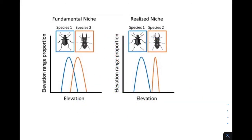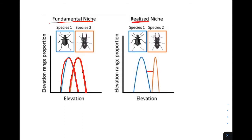Let's take a look at another graph. This graph shows the fundamental niche and the realized niche of beetles that can occupy different elevations on a mountain. Species 1's fundamental niche is shown in blue and species 2's in orange. There is a region of overlap where both species can occupy the same range of elevation. However, in their realized niche they don't occupy that overlapping range — species 1 occupies the left extreme and species 2 occupies the right extreme, reducing competition.